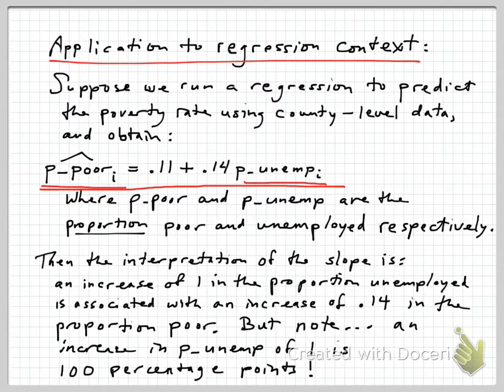And again, these proportions, the p variables, we're thinking as proportions that lie somewhere on the range 0 to 1. So again, the proportion unemployed, 0.1, would be a 10% unemployment rate.